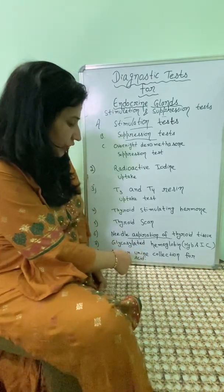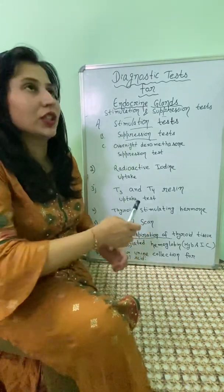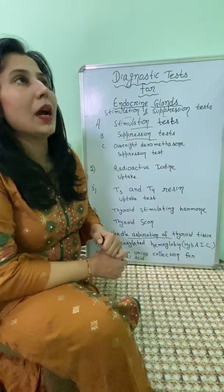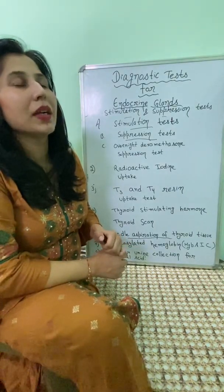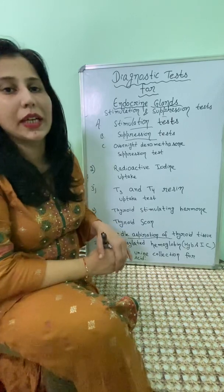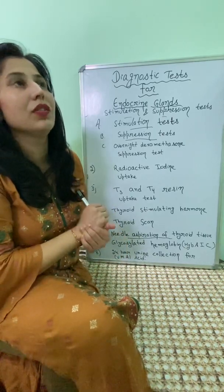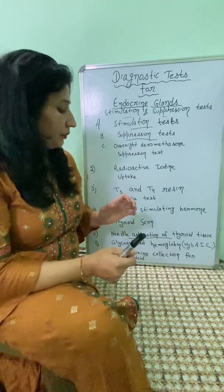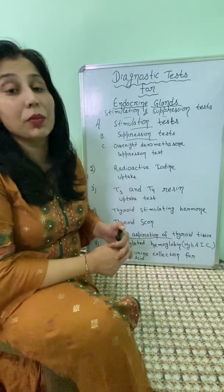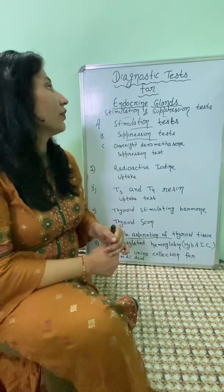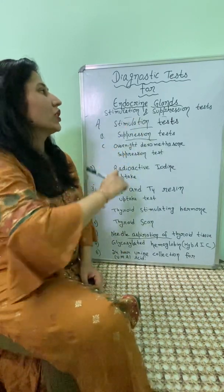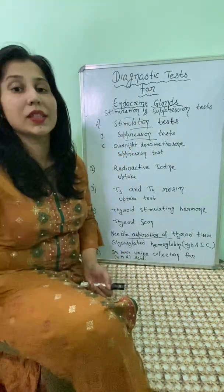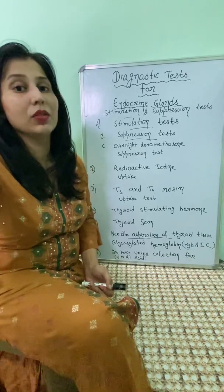The 24-hour urine collection test measures vanillylmandelic acid (VMA), which is a metabolite of catecholamines such as epinephrine and norepinephrine. If VMA is high, it indicates excess catecholamines. These are all the diagnostic tests for the endocrine glands. Please like and subscribe to my channel, and see you in the next video!